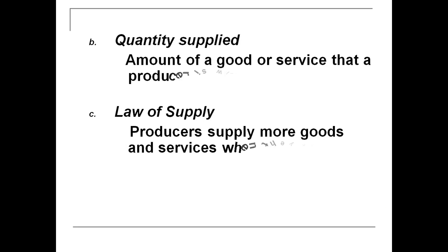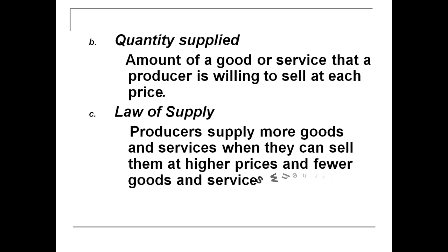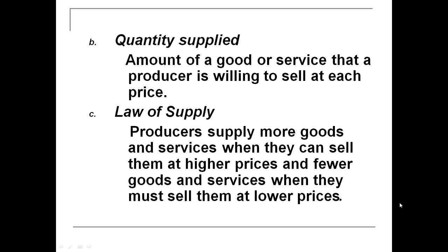Supply is different than quantity supplied. Quantity supplied is the amount of a good or service that a producer is willing to sell at each particular price. Price affects quantity supplied, which actually moves you from point to point along the supply curve.